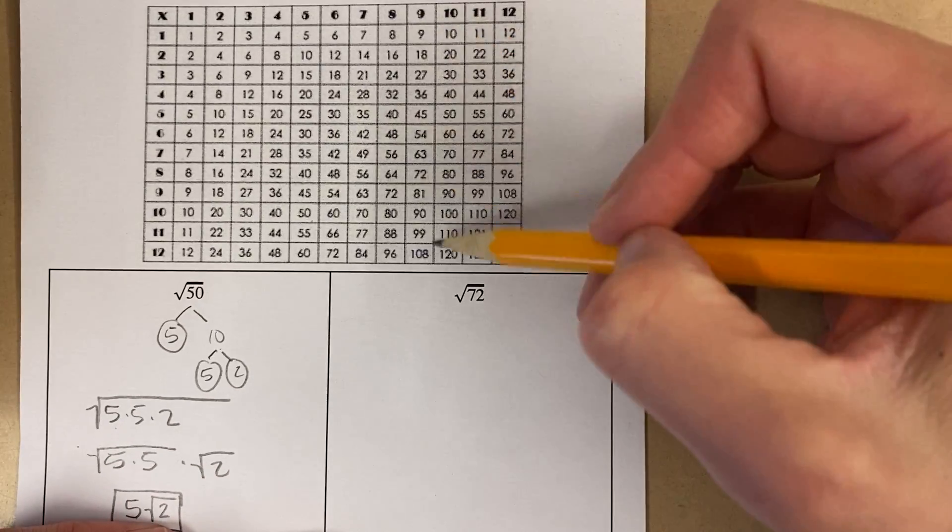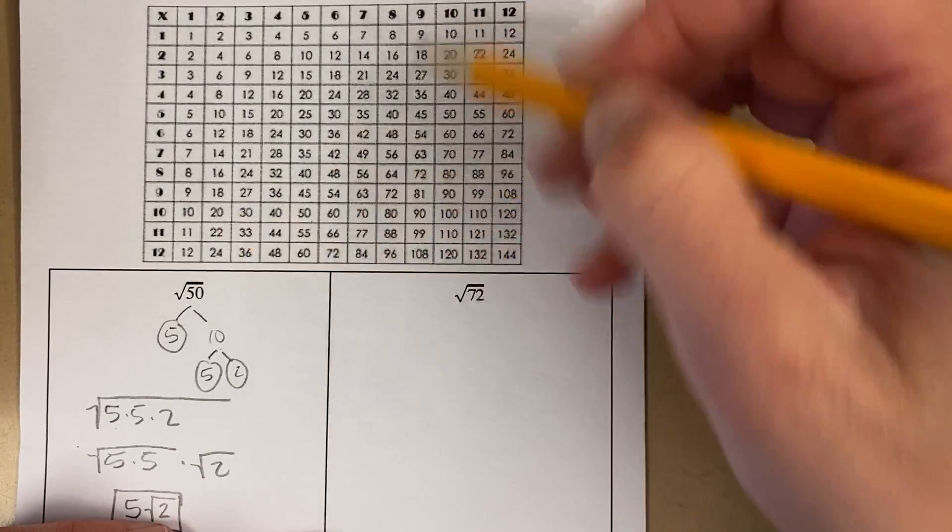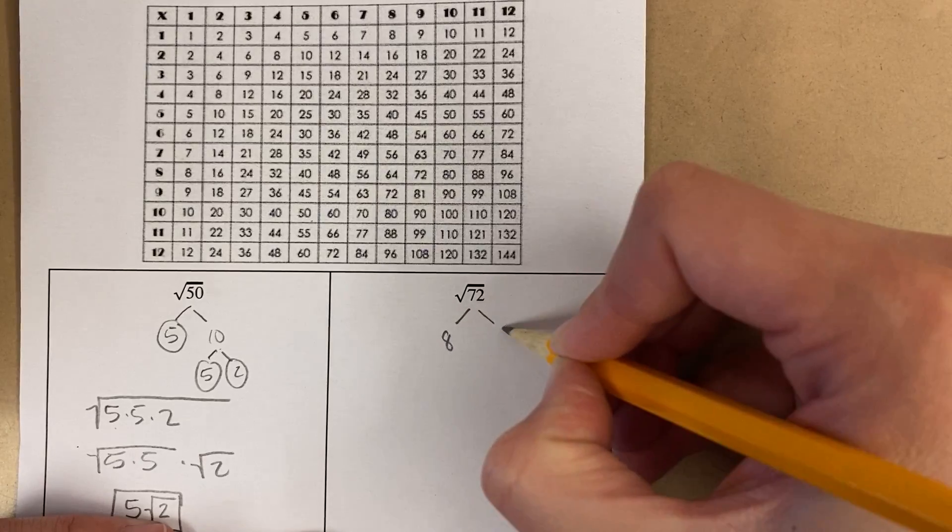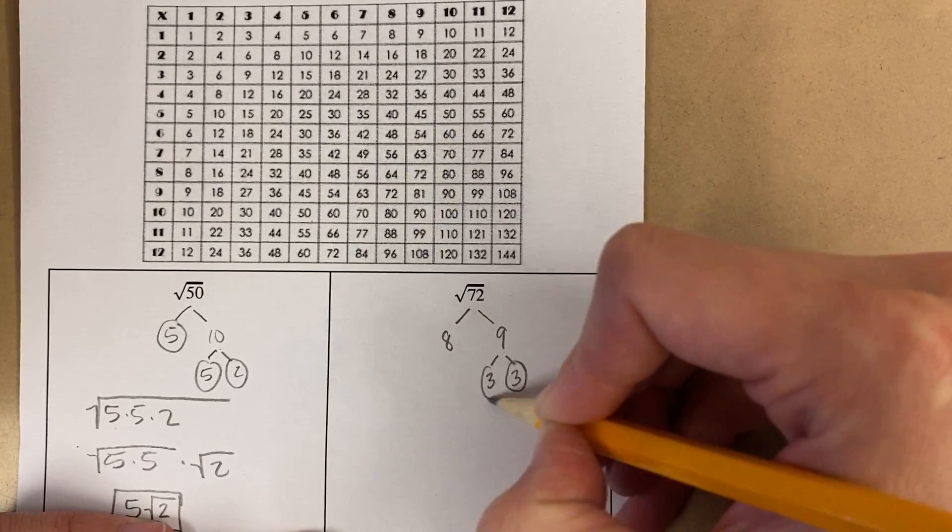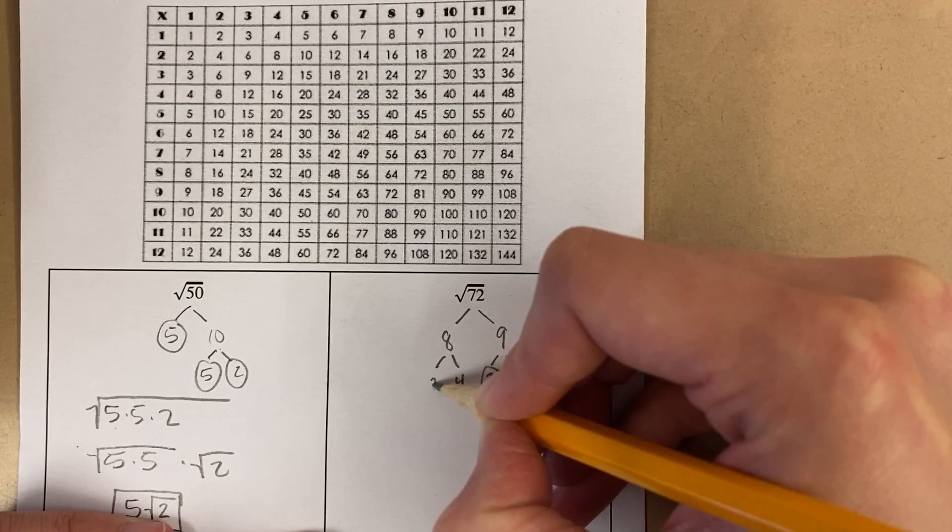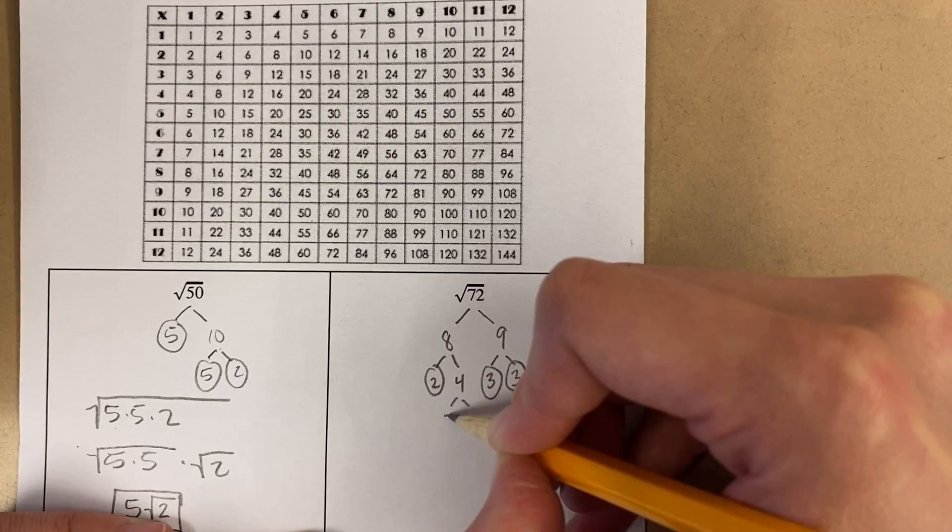Now I'm going to factor 72. If I look for 72 here, I find it here. That's 8 times 9. I know that 9 is 3 times 3. 3 is prime. 8 is 4 times 2. Careful, 2 is prime. But 4 is not prime.